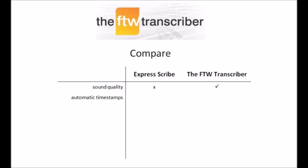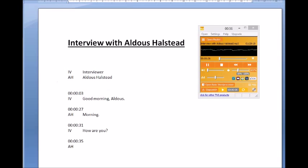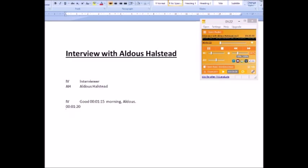Next, timestamps. The FTW Transcriber lets you add timestamps manually, but unlike ExpressScribe, it can optionally add timestamps automatically, which saves you huge amounts of time. They can be automatically added at the start of each paragraph, or they can be automatically added at regular intervals, for example every 5 seconds.